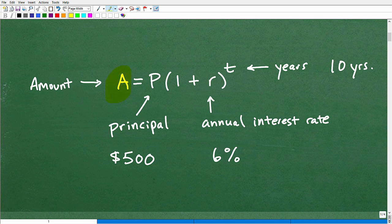So A equals P, parentheses 1 plus R, parentheses T. You will need a calculator to help you out to solve this problem for sure. But this is the formula. This is the simple compound interest formula. And now let's kind of break it down. Now, let's start with this A. Well, this is the amount that we're trying to determine. This is the amount that after 10 years, we come back and check our bank account, that we're going to grow.